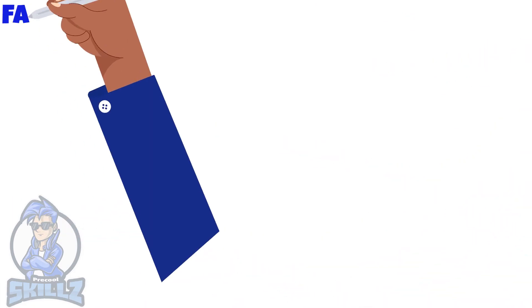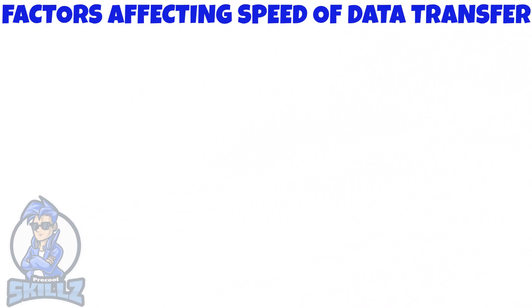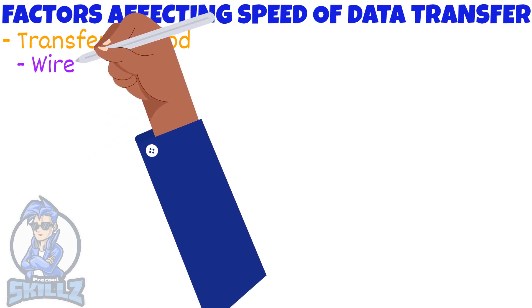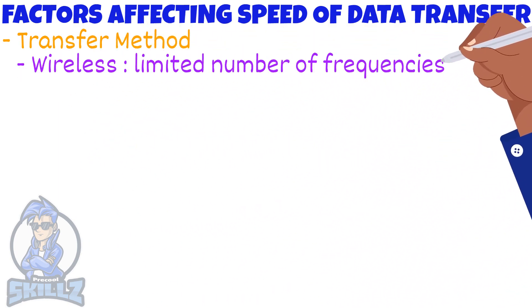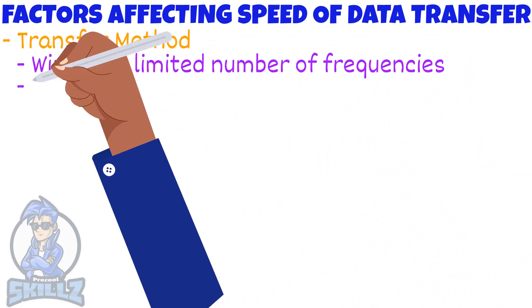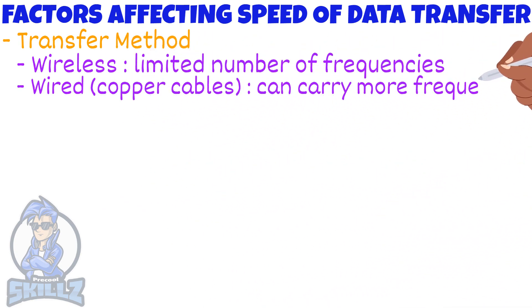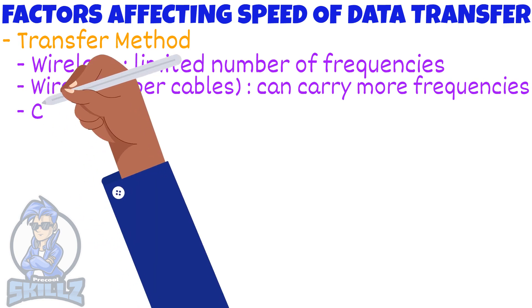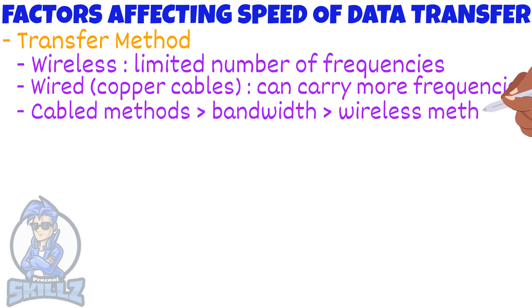Now let's take a look at some factors that affect speed and volume of data transfer. First is transfer method. Wireless methods have to work on a limited number of frequencies, but wired copper cables can carry more frequencies than wireless methods. So cabled methods have more bandwidth than wireless methods.